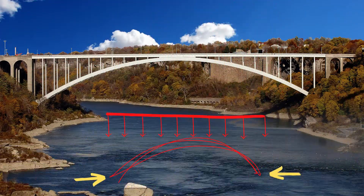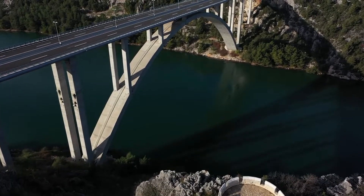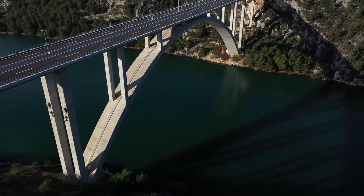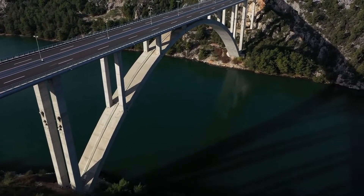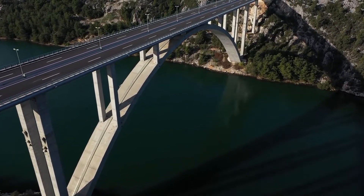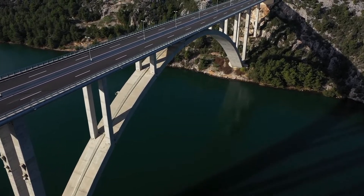Arch bridges work by transferring the weight of the bridge and its loads partially into a horizontal thrust, restrained by the abutments at either side. The curved arch is not only the key loading path element, but also the key architectural element. It realizes the perfect harmony between engineering and architecture.